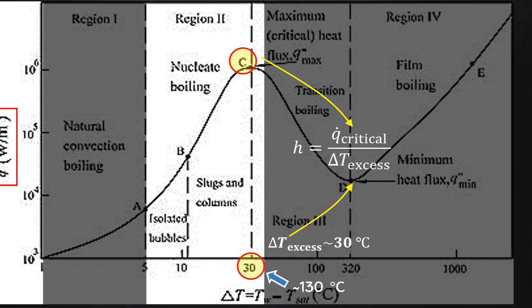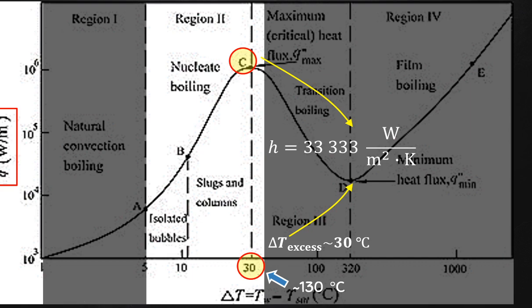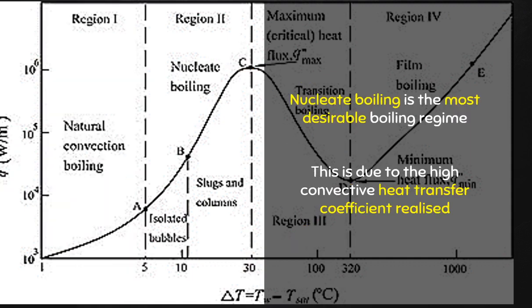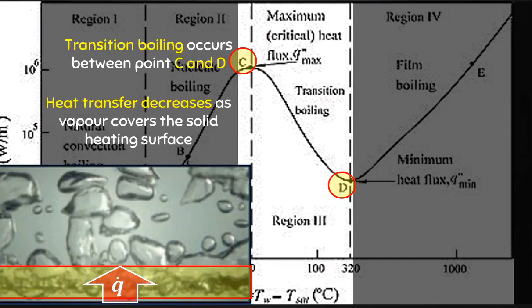At this critical heat flux, we obtain the highest possible convective heat transfer coefficient before the onset of film boiling — for water, about 33,000 watts per meter squared Kelvin. Of all the boiling types, nucleate boiling is the preferred choice due to this very high effective convective heat transfer coefficient.